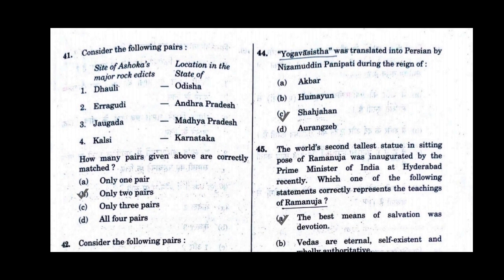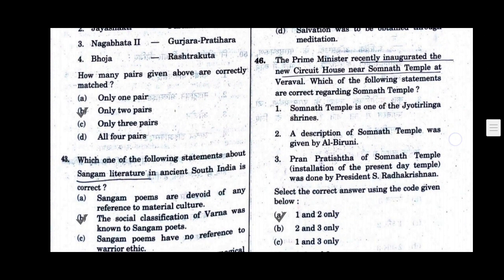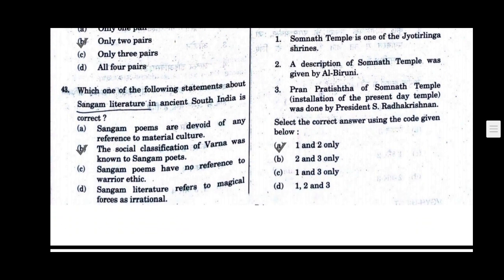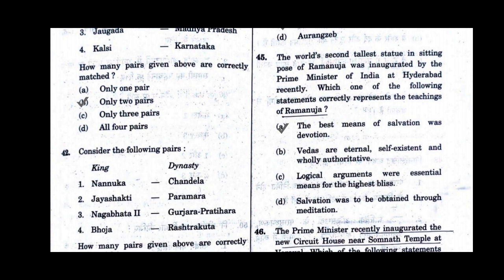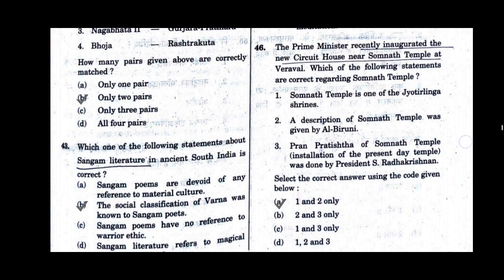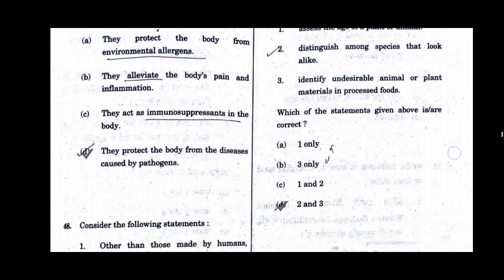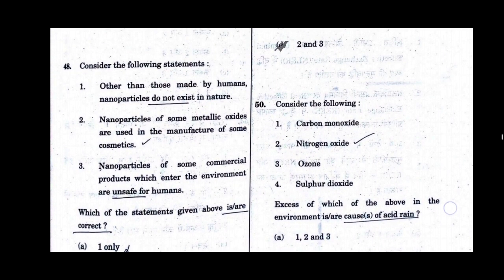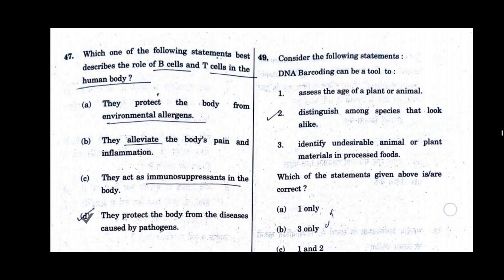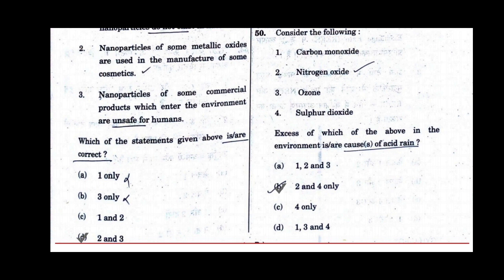Question number 41, option B will be the correct answer. Question number 42, option B will be the correct answer. Question number 43, option B will be the correct answer. Question number 44, option C will be the correct answer. Question number 45, option A will be the correct answer. Question number 46, option A will be the correct answer. Question number 47, option D will be the correct answer. Question number 48, option D will be the correct answer. Question number 49, option D will be the correct answer. Question number 50, option B will be the correct answer.